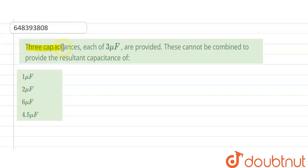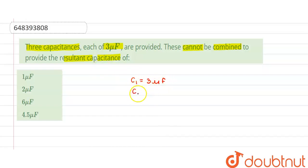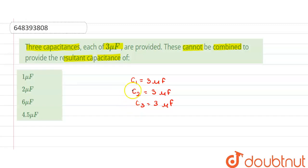Hello friends, our question is: 3 capacitances each of 3 microfarad are provided. These cannot be combined to provide the resultant capacitance of which value? We are given C1 = 3 microfarad, C2 = 3 microfarad, and C3 = 3 microfarad. The options are 1 microfarad, 2 microfarad, 6 microfarad, and 4.5 microfarad.